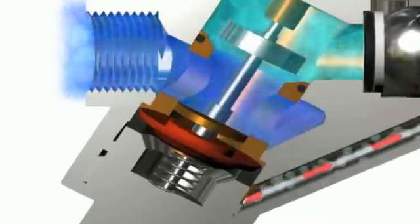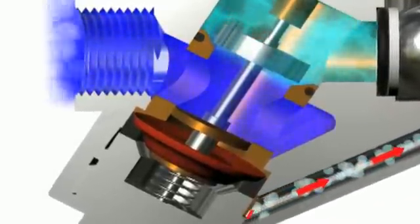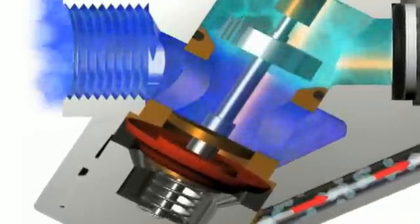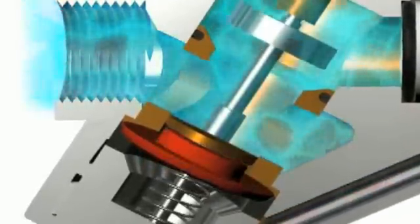The regulator section reacts to changes in differential pressure so that the flow remains constant regardless of pressure fluctuations.